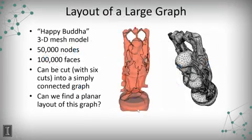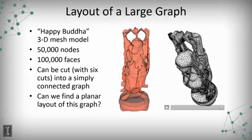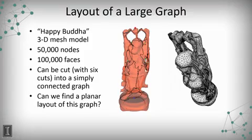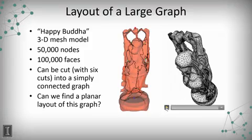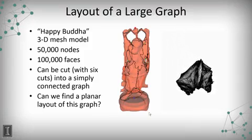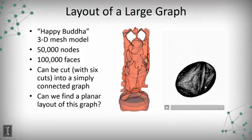We can do this for very large graphs. For example, here's a triangle mesh representing a geometric object. It's a triangle mesh, so the vertices are nodes and the edges of the triangles form the edges between the nodes. This large graph of 50,000 nodes is not a planar graph. But if I make cuts in it — if I separate the faces and duplicate edges — I can turn it into a planar graph just by making cuts along the black lines. As a planar graph, I can then find a way of embedding it into the plane so that the edges don't cross.